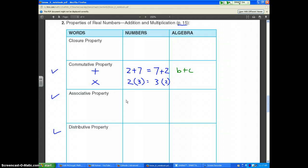If I have B plus C, I can switch them around and maintain the same answer. That's the same as C plus B. Same for multiplication. X times Y is the same as Y times X. So that's the commutative property.